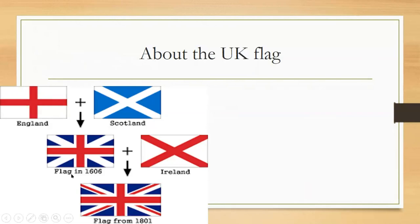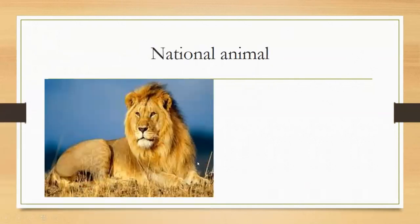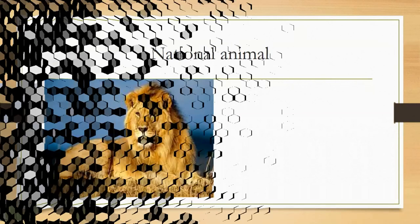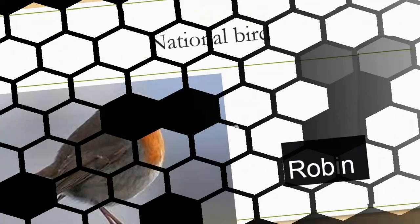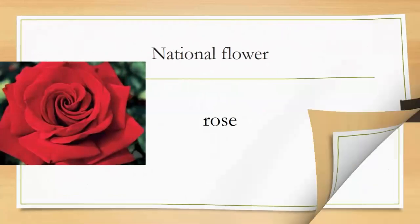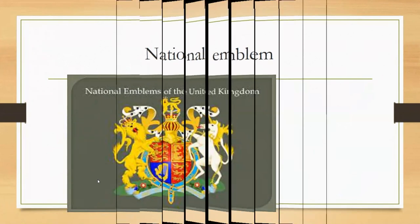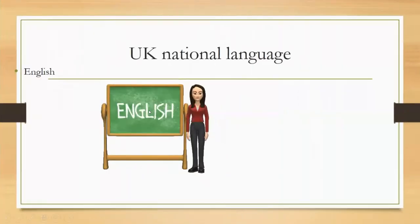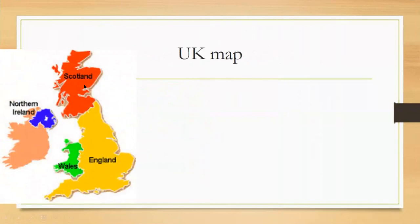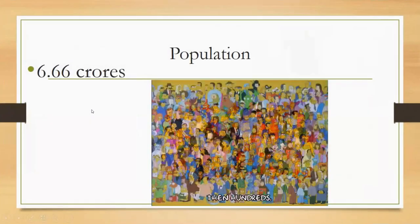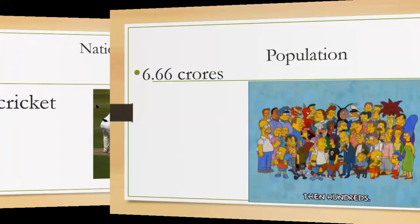After that, in 1606, Ireland flags were combined and the current flag was made in 1801. The national animal of the UK is the lion and the national bird is Robin. The national flower of the UK is the rose. The map of UK shows Scotland, England, Wales and Northern Ireland. The population is 6.6 crore people. The national sport is cricket.